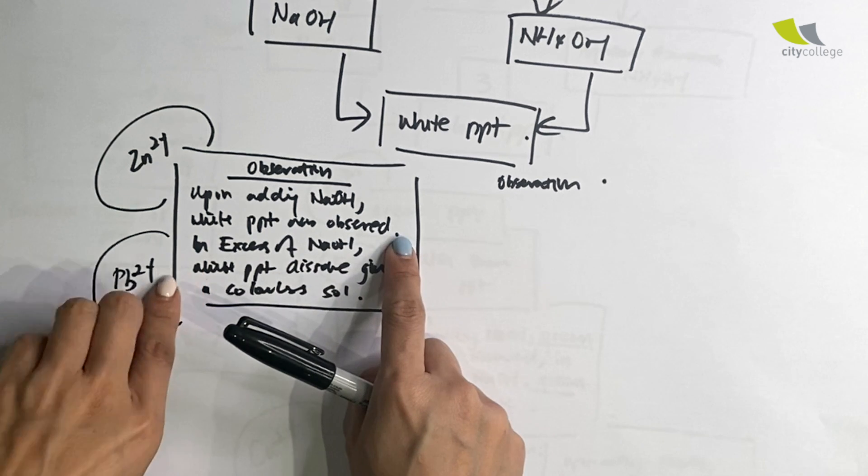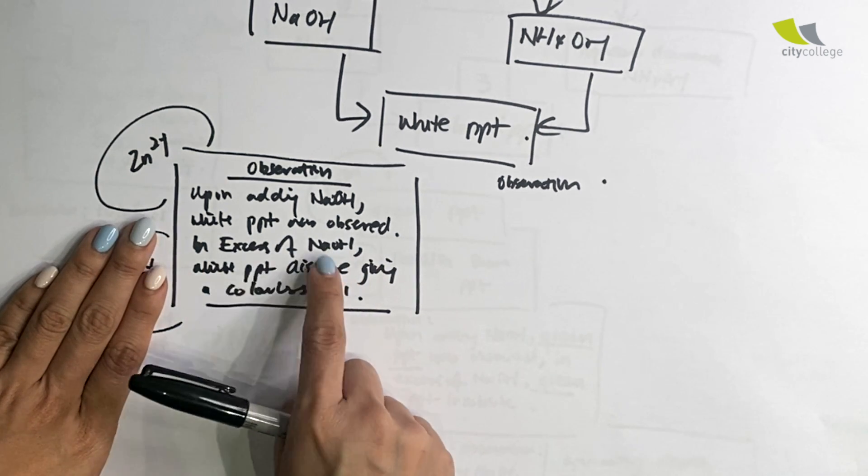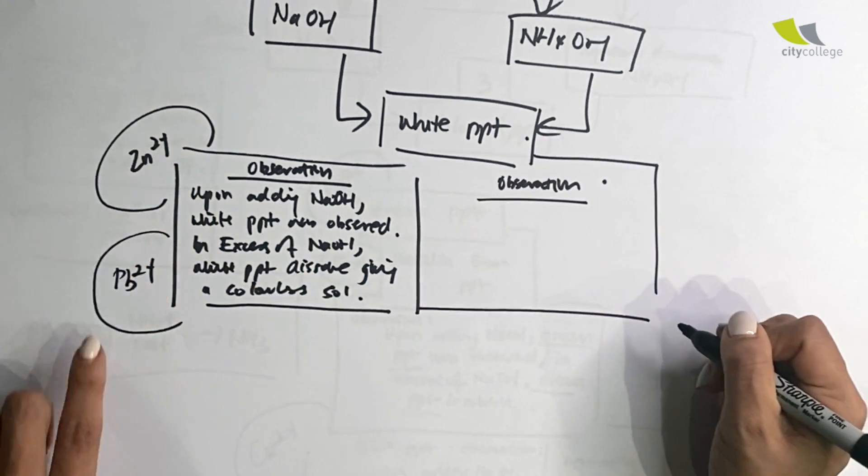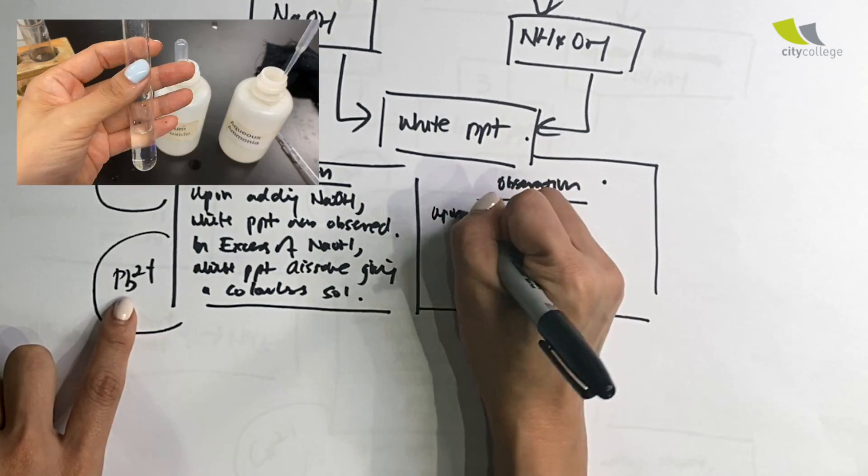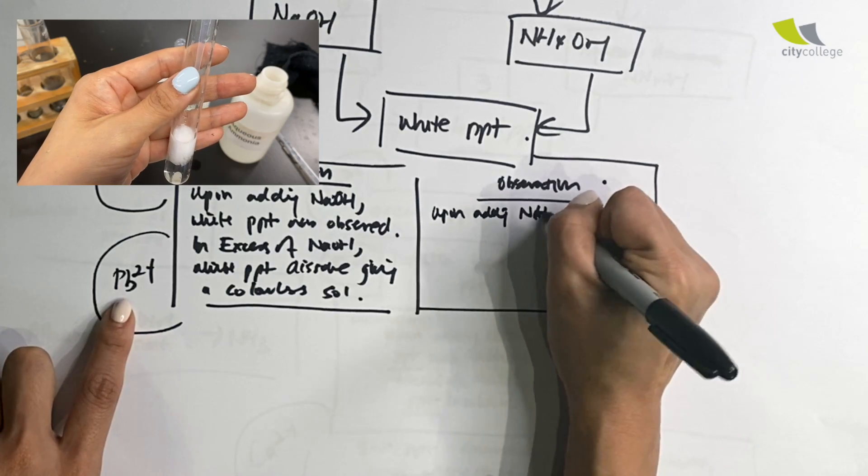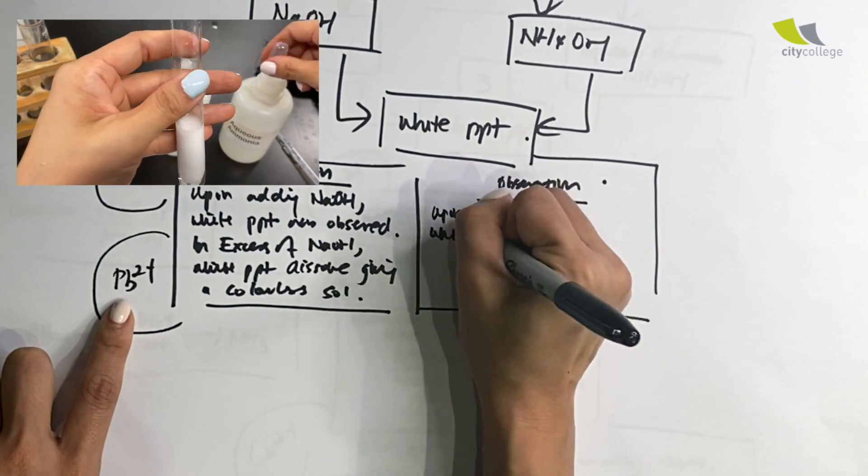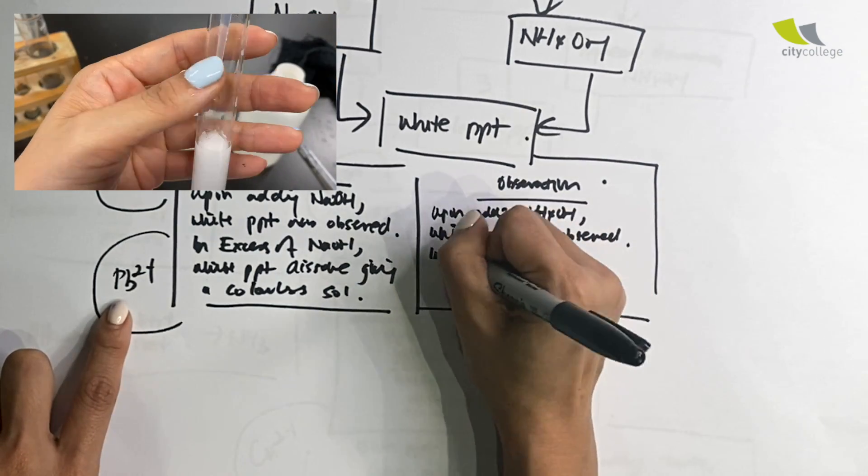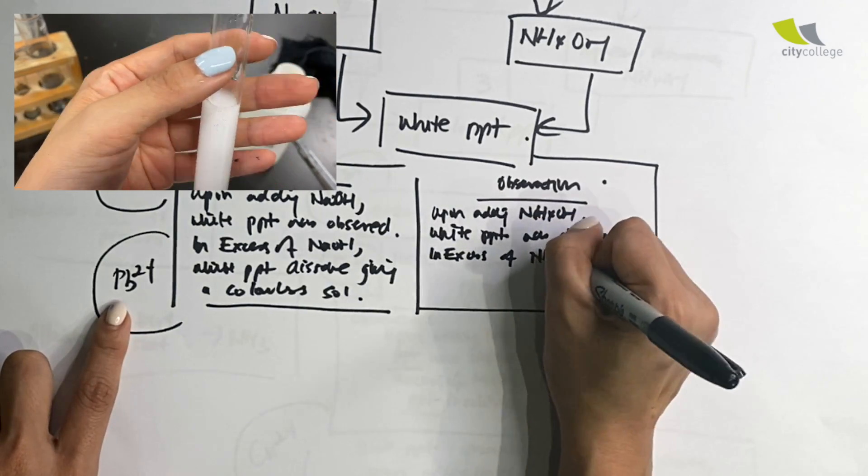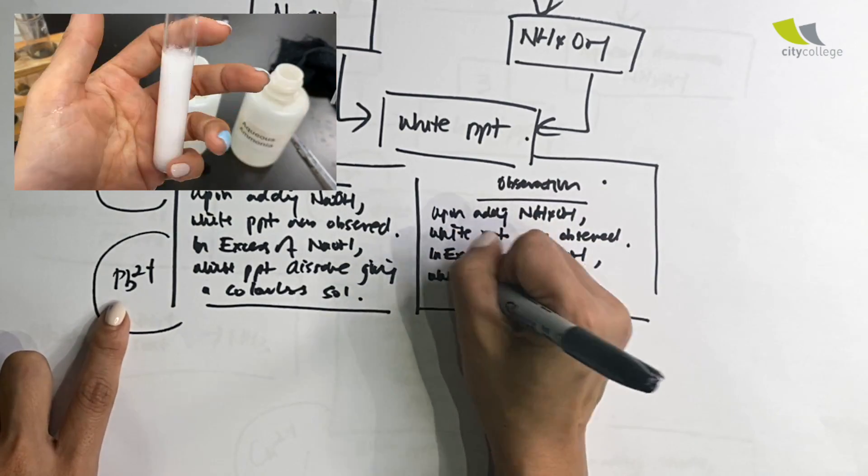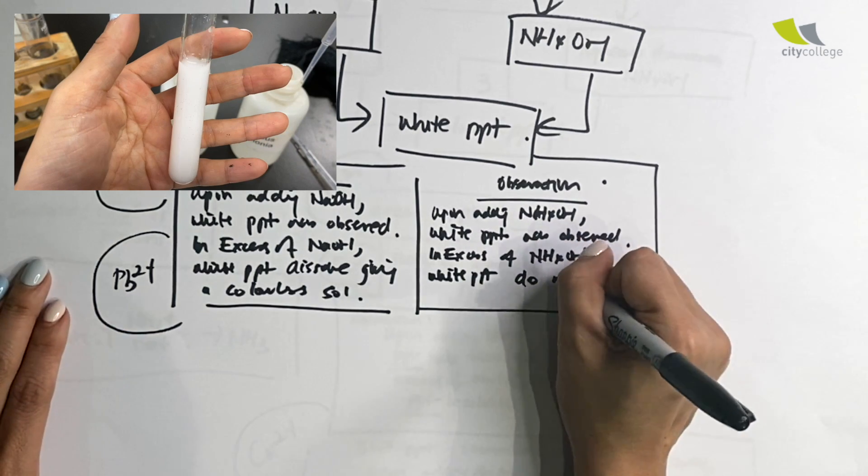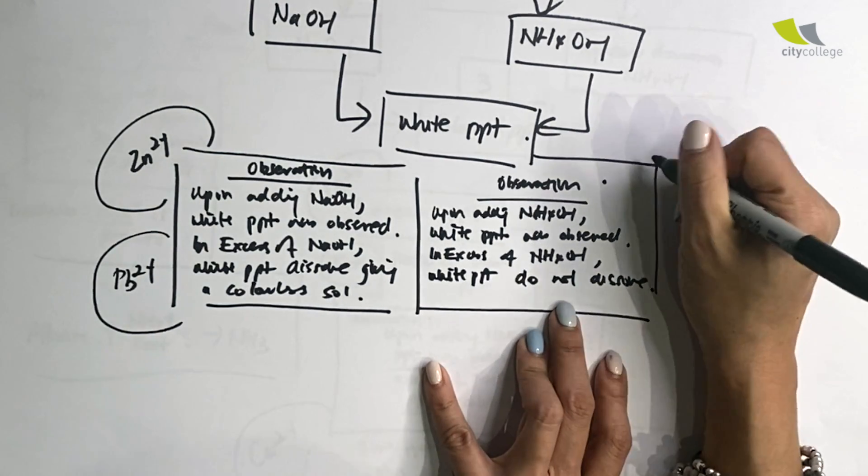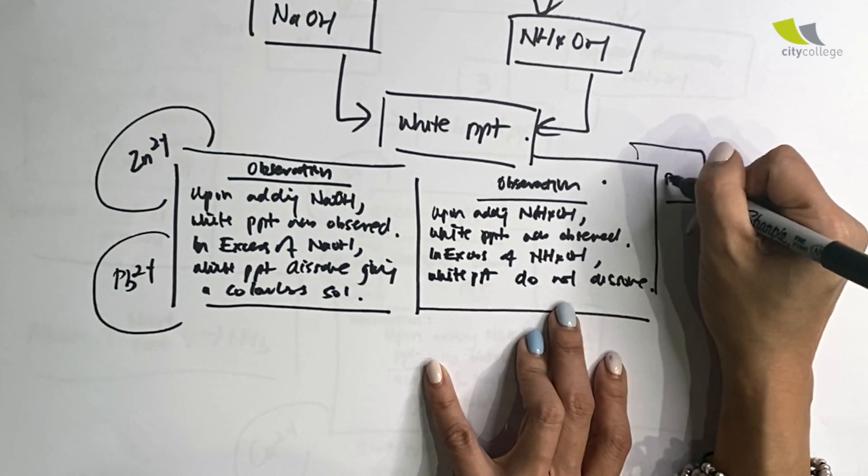However, if it's Pb2+, it will be like this. Upon adding NH4OH, white ppt was observed. In excess of NH4OH, white ppt do not dissolve. Okay, that means that the white ppt is insoluble, and this will actually bring me to Pb2+.